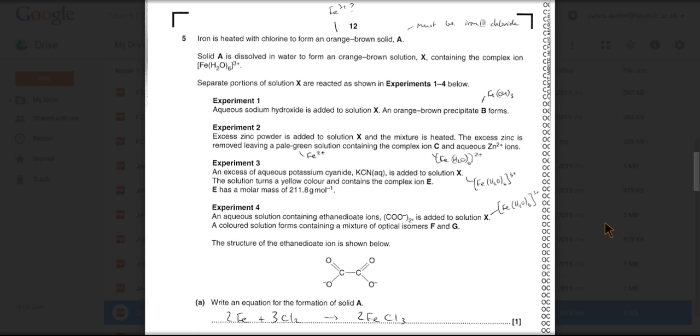...with chlorine to form an orange-brown solid A. Orange-brown is the color you associate with iron(III), so it's going to be iron(III) chloride in this case because of the color.